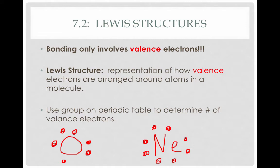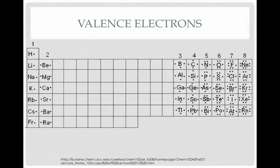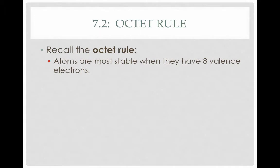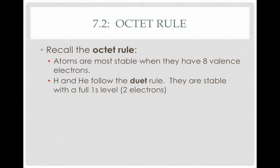Notice that the dots form somewhat of a square, with two on each edge. You should be able to look at the periodic table and know how many valence electrons each element has based on its group. The octet rule tells us that atoms are most stable when they have eight valence electrons. In covalent bonding, atoms share electrons to achieve a full octet — or in the case of hydrogen and helium, a full duet of two valence electrons.